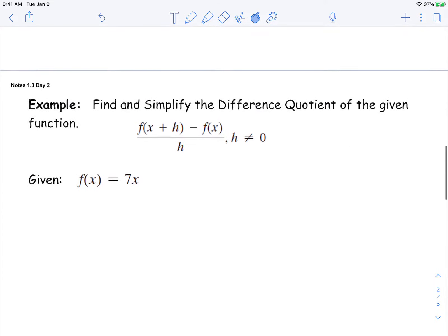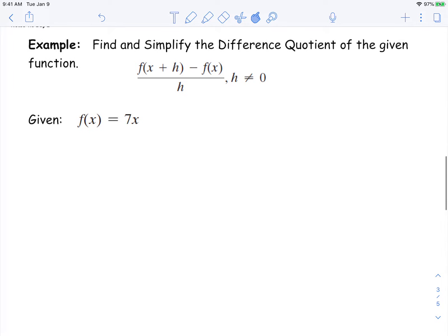So we're going to go ahead and do an example. This is your difference quotient expression, and then this is your function. So we're going to first evaluate the function for x plus h. We're going to replace that x with x plus h. Then we're going to subtract the function, so 7x, and then divide all over h.